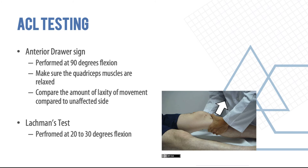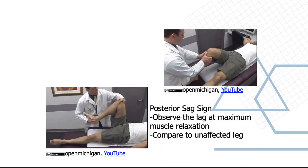For the anterior cruciate ligament, the main test is the Lachman's test, performed at 20–30 degrees of flexion. Hold the femur, place your thumb on the tibial tuberosity, exert an anterior force, and assess for laxity — always comparing to the other leg. This is more sensitive than the anterior drawer test. In the anterior drawer test, flex the knee to 90 degrees, ensure quadriceps muscles are relaxed, and compare laxity to the other side. Any increase in laxity may indicate an ACL injury.